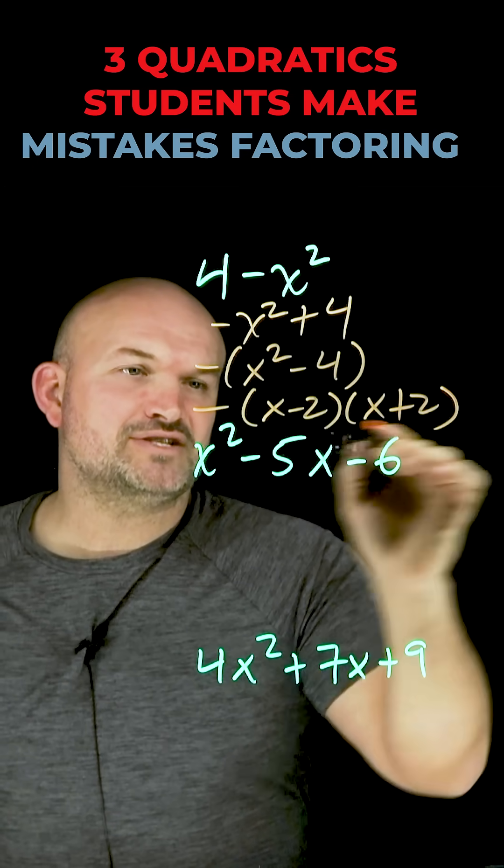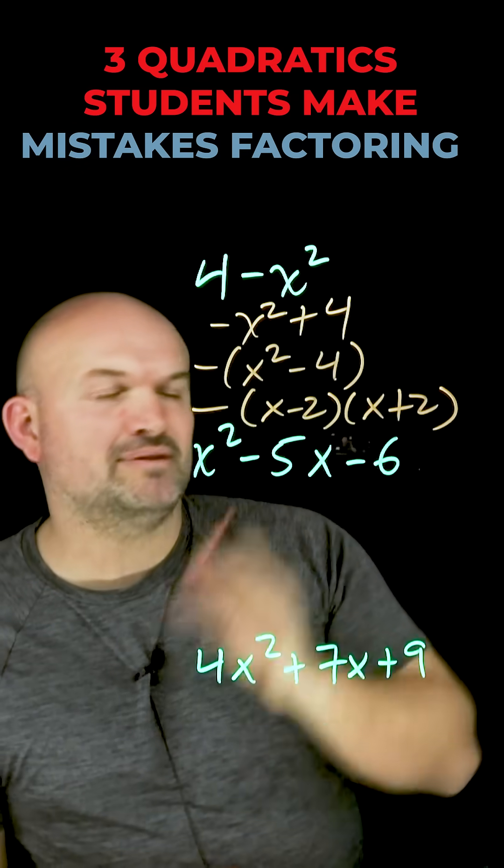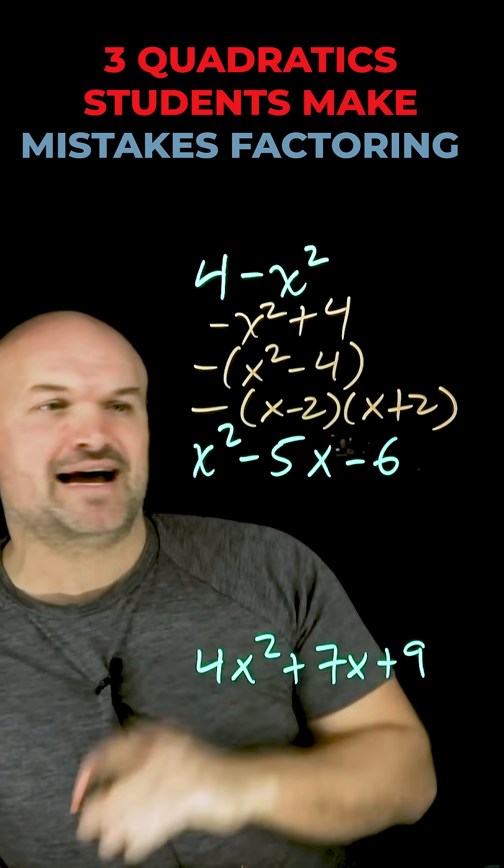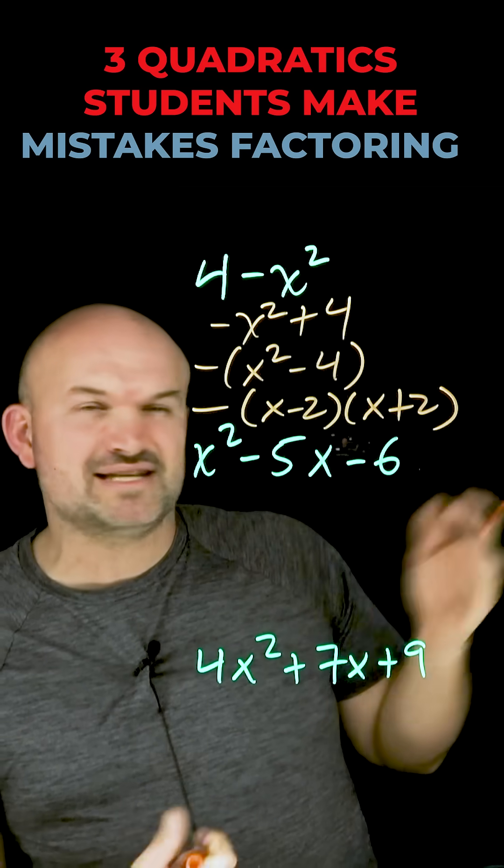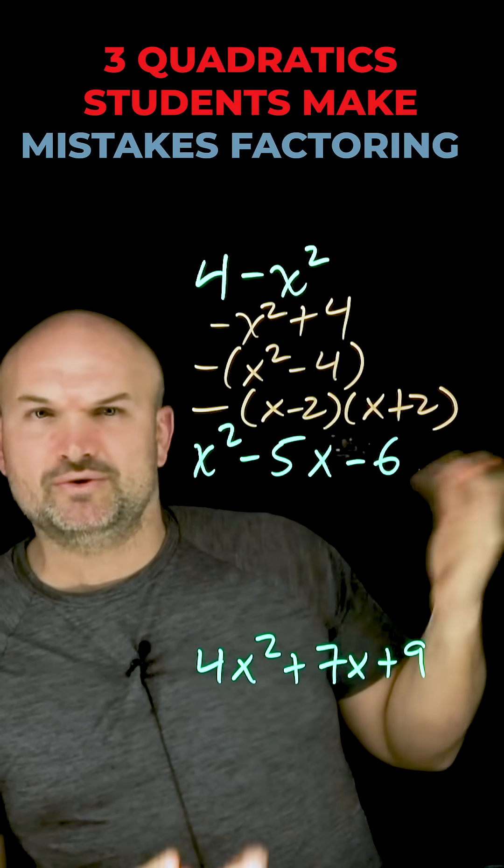The next one is probably so commonly missed, it almost happens every single time we're dealing with factoring quadratics. Students immediately see 6, they say what two numbers multiply to give me 6. Forgetting about the negatives, they say oh well 2 and 3.